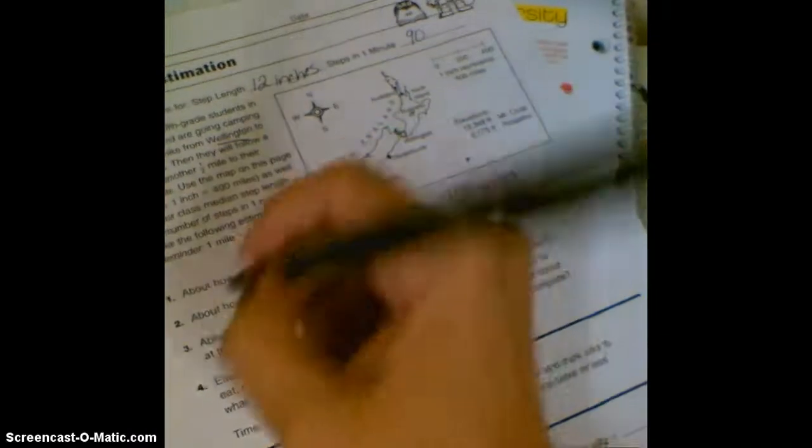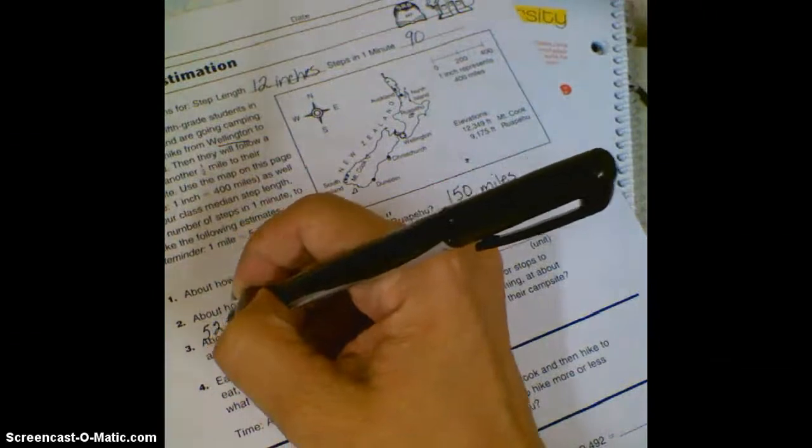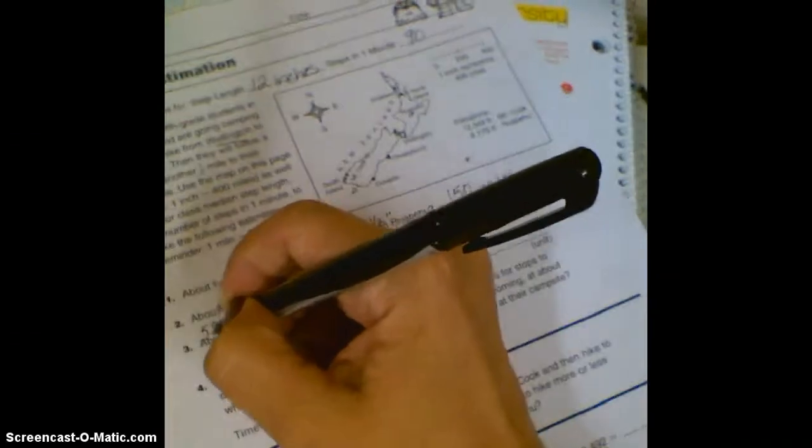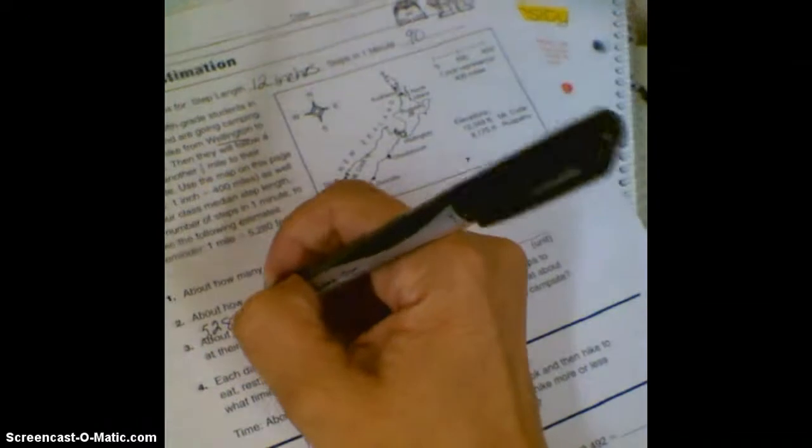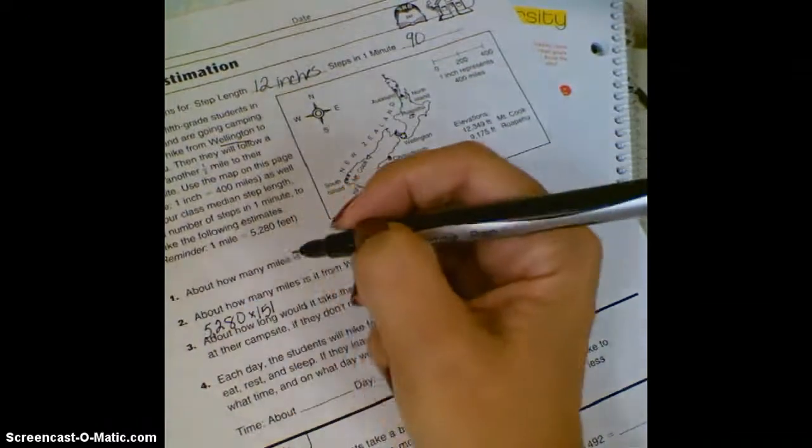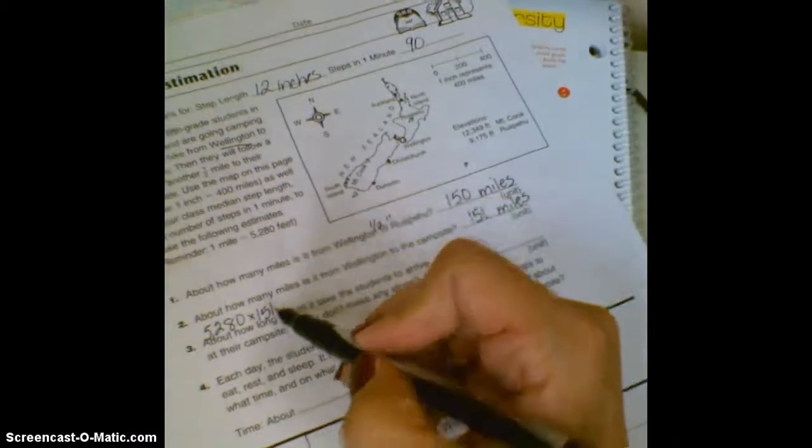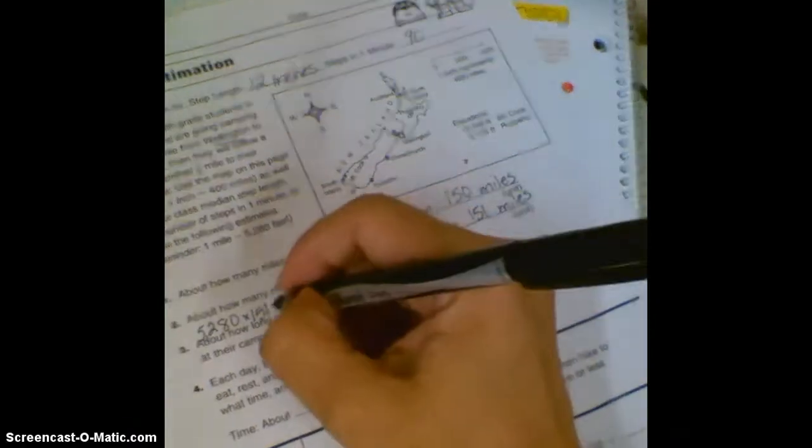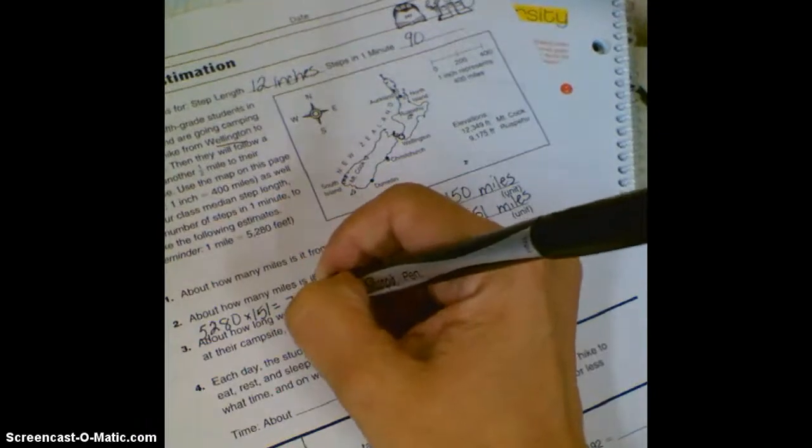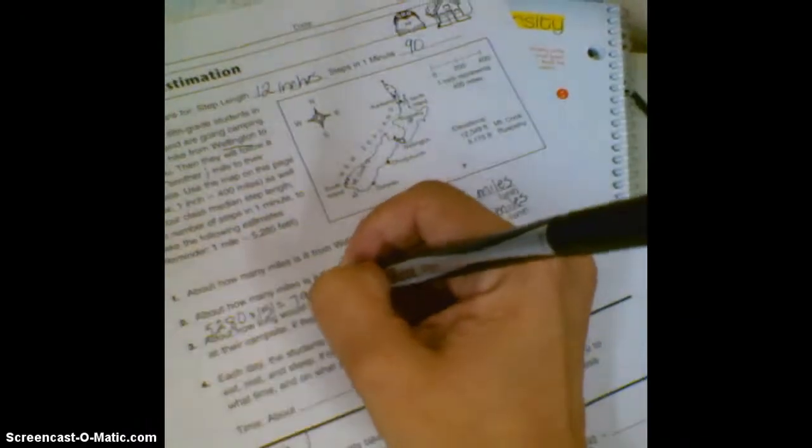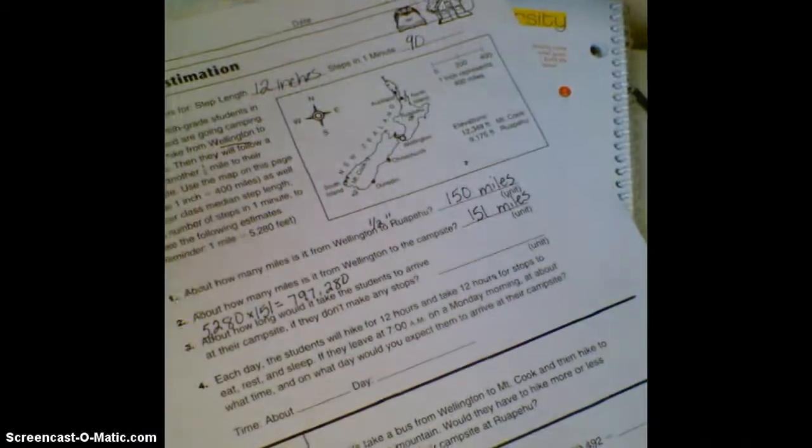And so if we're going this many miles, then we know it will be that many steps. So we are going to actually walk 5,280 steps for one mile, but we need to walk 151 miles. So get your calculator handy and do 5,280 times 151. You're going to get a big number, ready for it? 797,280. If you didn't get that number, try it again in your calculator. Hopefully I got the right number.